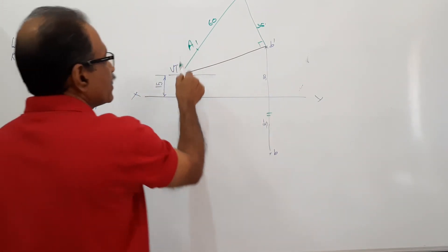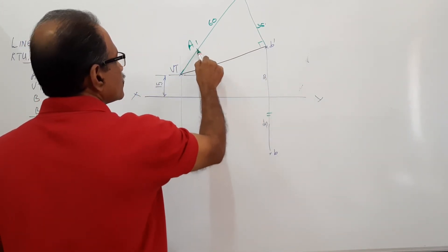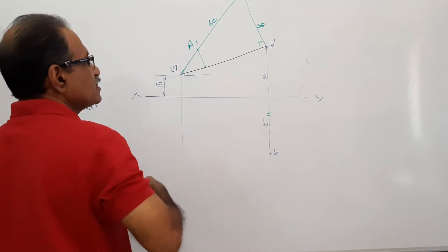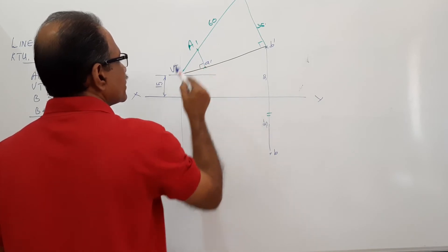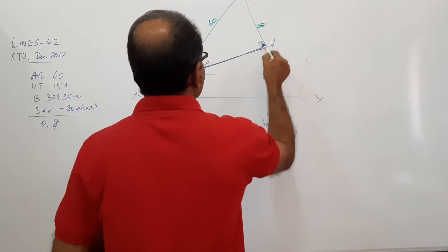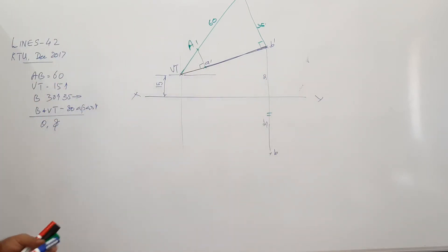If this is A1, draw a perpendicular to this. What is this? This is A2. A2 is the final elevation, actual elevation. Agreed?